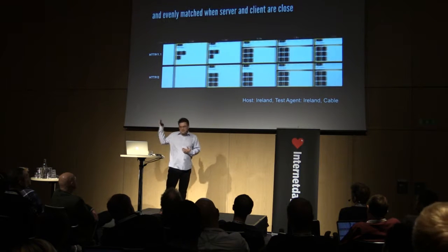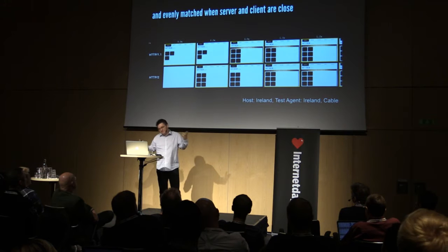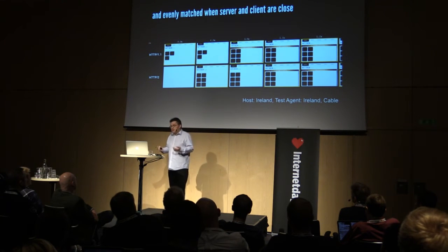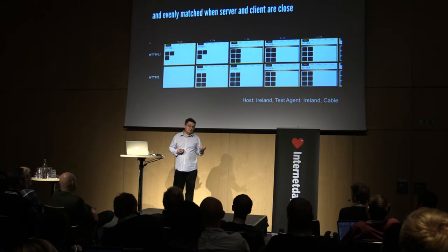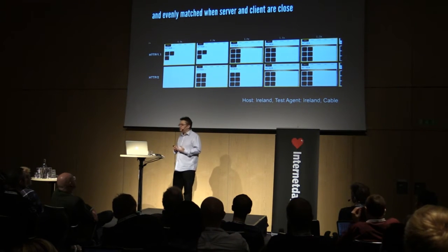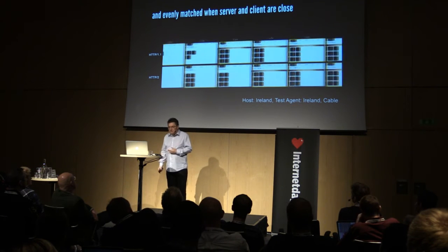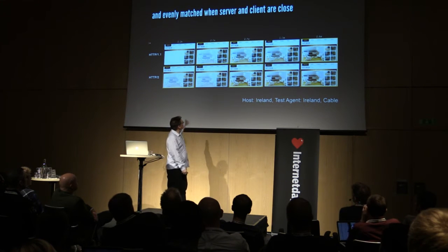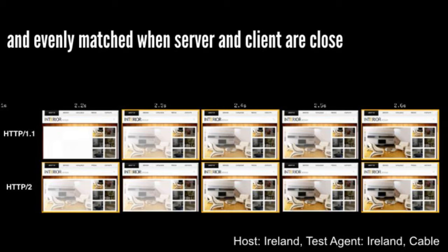You might say: my customers aren't in Singapore, they're in mainland Britain. So I did the same test with both host and test agent in Dublin, really close together. HTTP 1.1 gets there a bit quicker in the beginning — not surprising, because HTTP2 has to make a TLS negotiation, so it has more overhead. Then HTTP2 gets a bit ahead. They finish in about the same time, but the advantage is we've got a secure connection — HTTP2 overcomes the overhead of the secure connection.